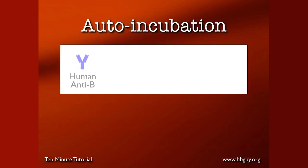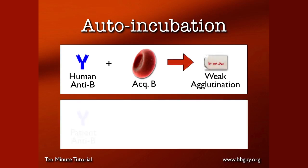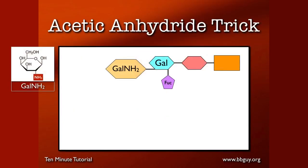Autoincubation — remember, if you take human anti-B, especially fresh, and react it against acquired B cells, you're going to get weak agglutination. However, if you take this patient's own anti-B — which we already know reacts super well with regular group B cells, as seen in the patient's reverse grouping — and react it with his own acquired B cells, which appear to be group B, you get no agglutination whatsoever. The patient's anti-B does not react against their own acquired B cells.